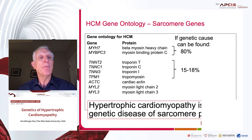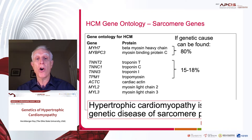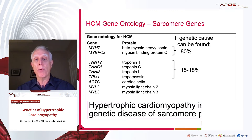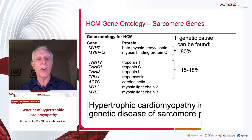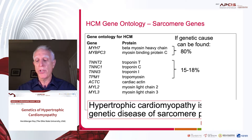HCM gene ontology is shown here with these sarcomere genes. If you can find a genetic cause, about 80% will be these two genes: MYH7 and MYBPC3. If you add the troponins and tropomyosin, you get almost 95% to 98% of genetic causes, and adding in cardiac actin and the light chains, you'll get almost all of what you can find for conventional non-syndromic hypertrophic cardiomyopathy.